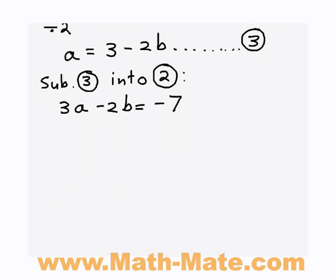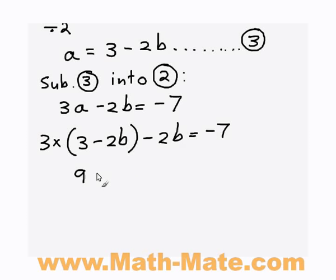And now, instead of a, I can substitute in 3 minus 2b. So instead of a, I'm going to write 3 minus 2b, then I've still got the other minus 2b, and that's going to equal negative 7. What I can do now is multiply out the brackets. So 3 times 3 is 9, 3 times negative 2b is negative 6b, and minus 2b, and it's still equal minus 7. So this becomes 9 minus 8b equals minus 7.